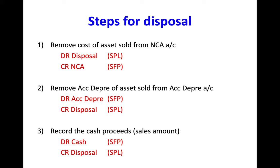The third component is to record the cash proceeds — the amount you receive from selling the asset. You debit cash, because cash is in the SFP, and you credit the same disposal account we have looked at in parts one and two.